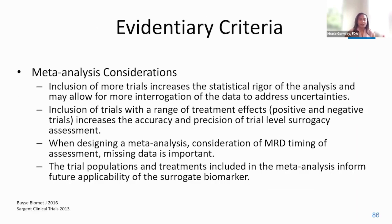There are several considerations in the conduct of a meta-analysis for surrogacy evaluation. Ideally, there should be inclusion of more trials, as this increases statistical rigor and may allow for more interrogation of the data to address remaining uncertainties. There should be inclusion of trials with a wide range of treatment effects — both positive and negative trials — to increase accuracy and precision of the trial-level surrogacy assessment. Consideration of MRD or specific biomarker timing of assessment is really important, missing data should be accounted for, and the trial populations and treatments included inform the future applicability of the surrogate biomarker.